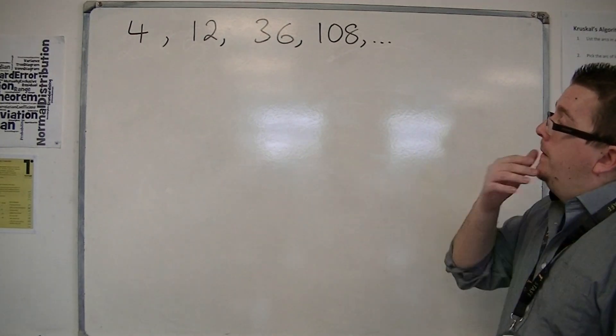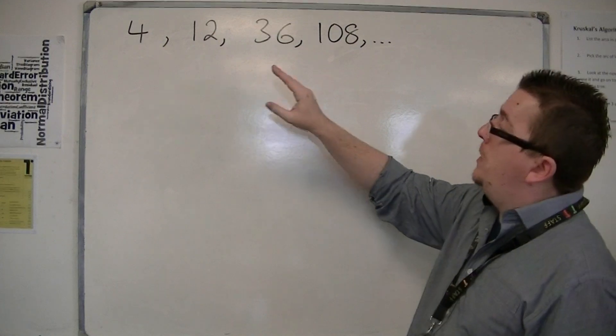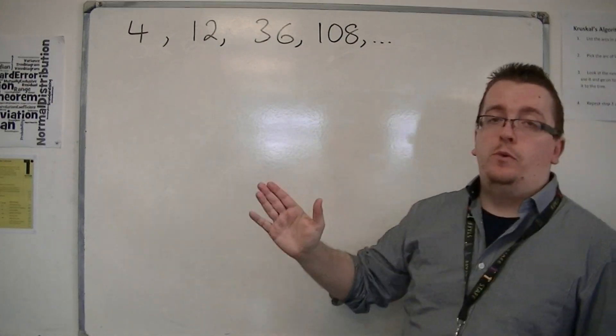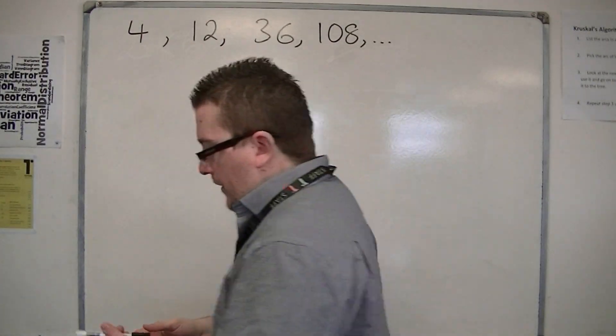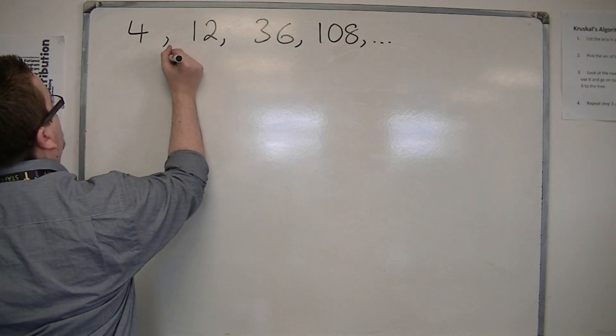With geometric sequences like this, here is an example: 4, 12, 36, 108, and so on. What's happening is that each time I'm multiplying by 3.